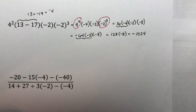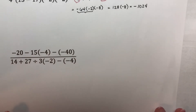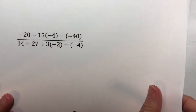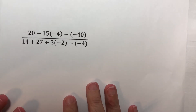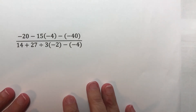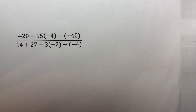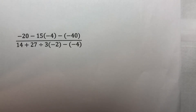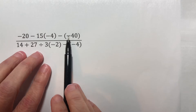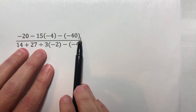For the last problem in this review, it's about as ugly as it can get. We have a whole lot going on in both the top and the bottom. Remember, the fraction bar divides it into two problems — we simplify the top, we simplify the bottom, and then we do the division at the end. The first step for the top problem is to simplify inside parentheses if we can, and there's nothing to do here.